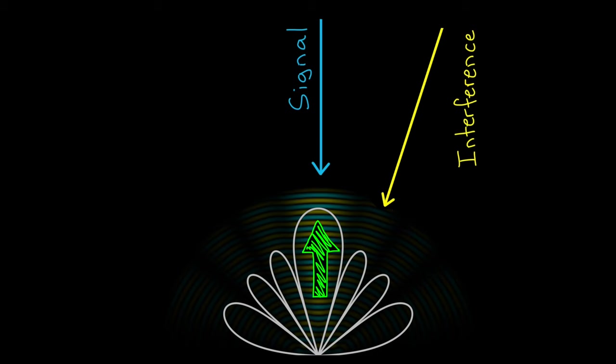And ideally, we would just point that sharp beam at the signal, and then hopefully the array gain in the direction of the interference would be low enough that the signal to noise plus interference ratio at the receiver is sufficient. Of course, this might not be the case because we have these side lobes. Now, they have less gain than the main lobe, but a loud interference signal from that direction will still impact the received signal.